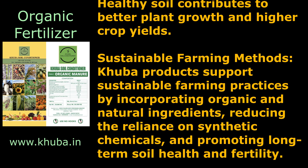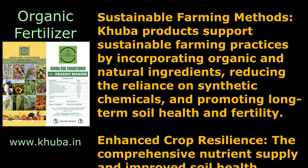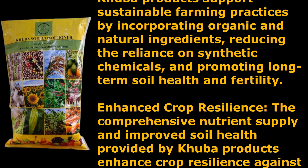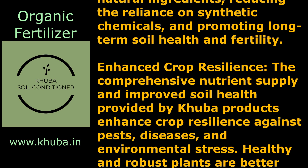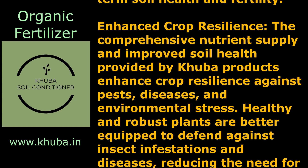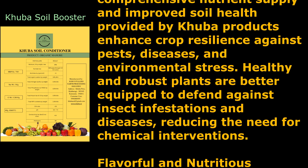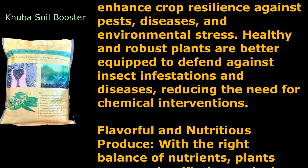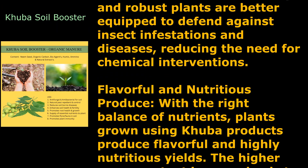Sustainable farming methods: Kuba products support sustainable farming practices by incorporating organic and natural ingredients, reducing the reliance on synthetic chemicals, and promoting long-term soil health and fertility. Enhanced crop resilience: the comprehensive nutrient supply and improved soil health provided by Kuba products enhance crop resilience against pests, diseases, and environmental stress. Healthy and robust plants are better equipped to defend against insect infestations and diseases, reducing the need for chemical interventions.